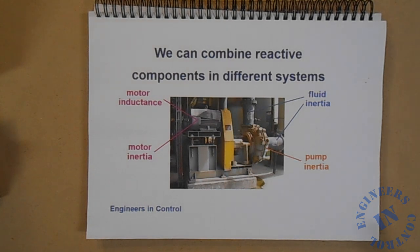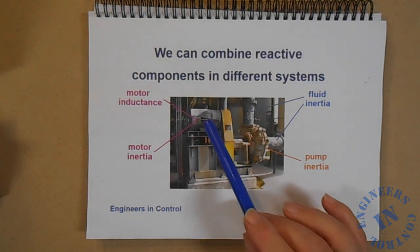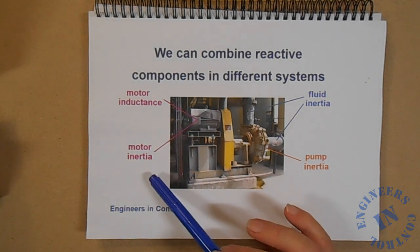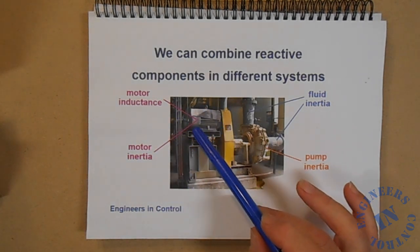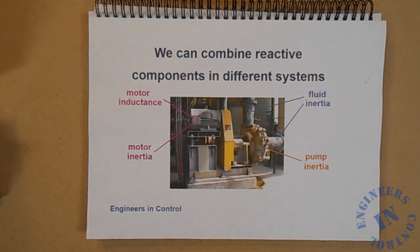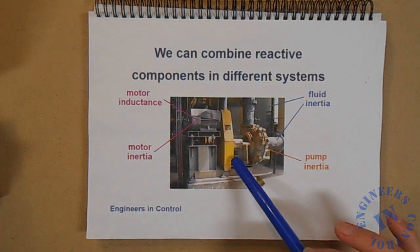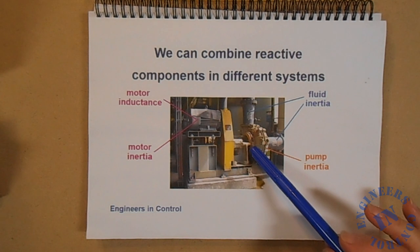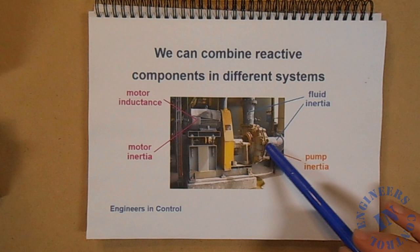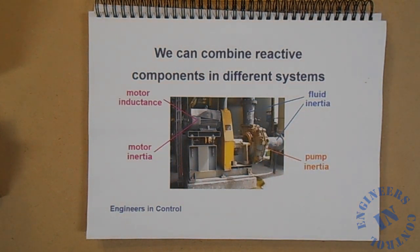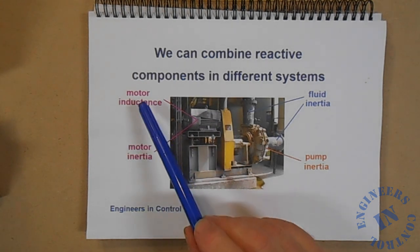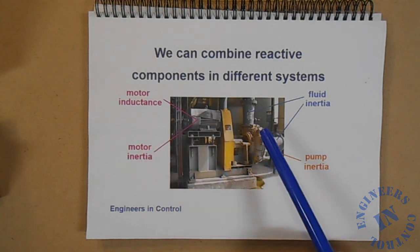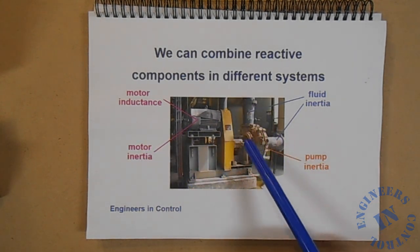As we saw, we have a motor with inductance as a reactive component and we also have the inertia of the armature. It's coupled by a chain drive usually to a pump. Here's the pump. Now the pump also has inertia and that's a reactive component. But we have fluid in the pipe work and the fluid has inertia too. So we have effectively four reactive components: inductance, inertia in the motor, inertia in the pump and inertia in the fluid flow.